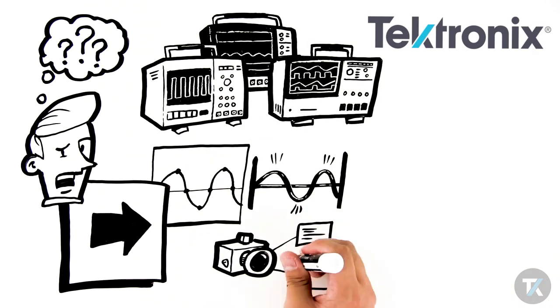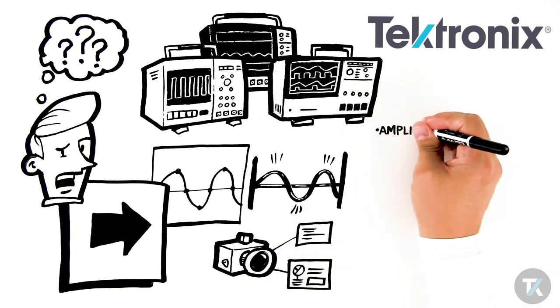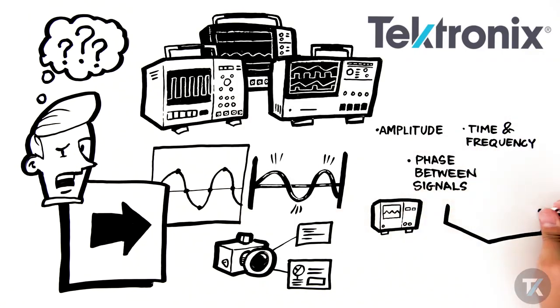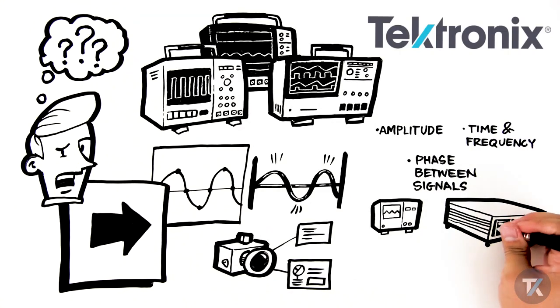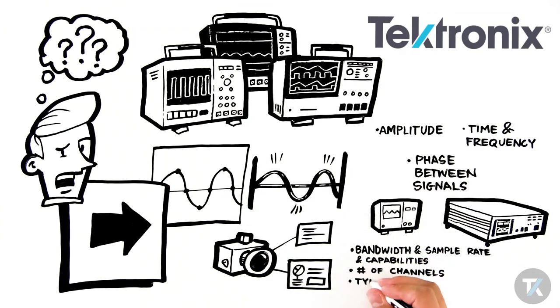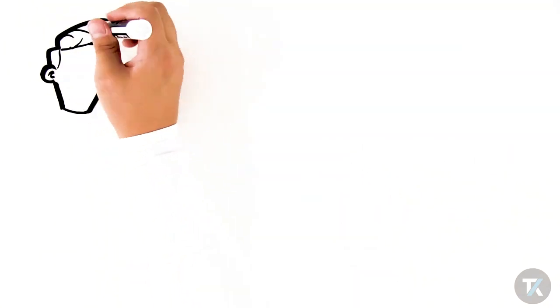They can all perform basic signal measurements: amplitude, time and frequency, and phase between signals. From general-purpose bench scopes to high performance instruments, they vary widely in terms of the speed of signals they can capture. This depends on bandwidth and sample rate, and capabilities such as number of channels, types of signals, and built-in measurements.